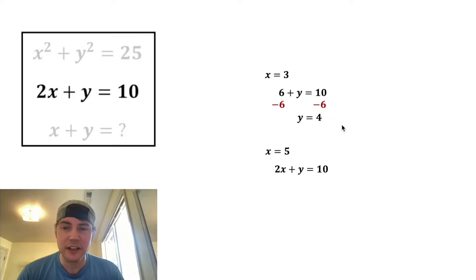let's subtract six from both sides, and we get y equals four. And same thing for this one, if we plug in five for the x, two times five is 10, subtract 10 from both sides, and we get y equals zero.